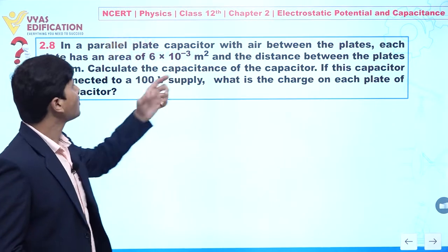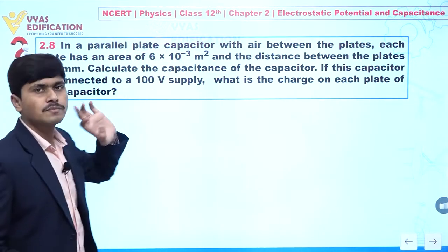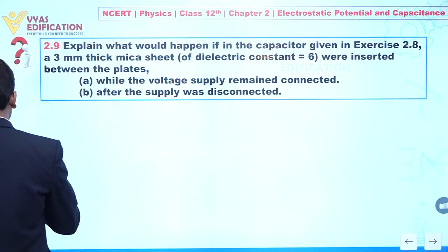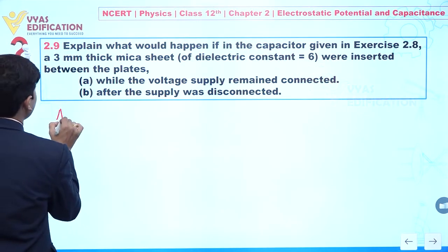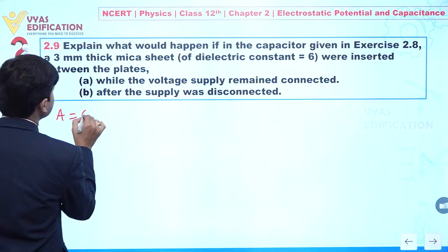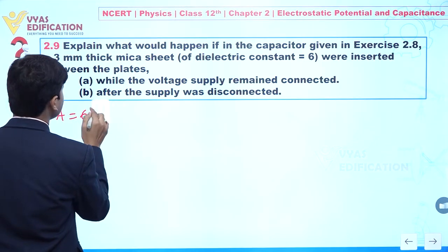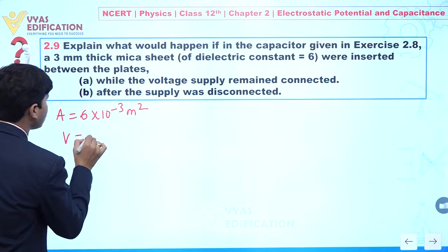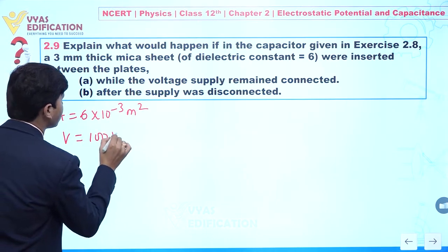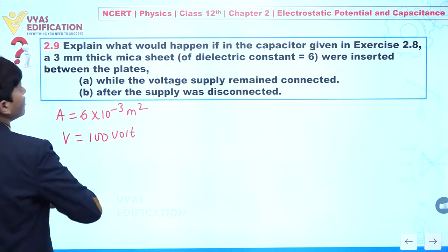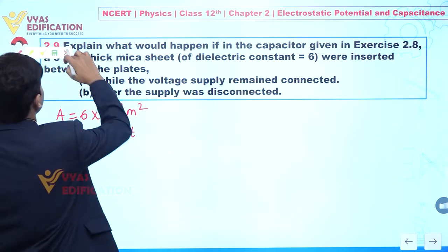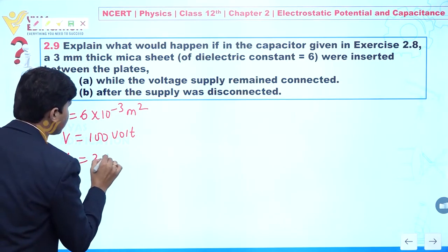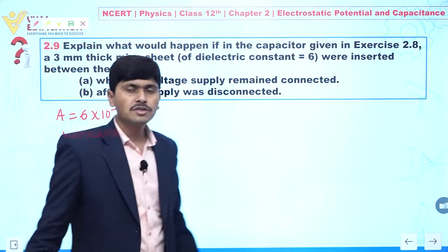From the previous question, the area is given as 6×10⁻³ m², the supply voltage is 100 V, and the distance between the plates is also given as 3 mm.